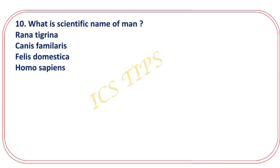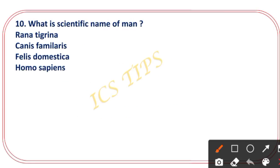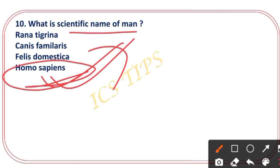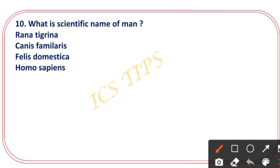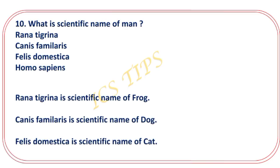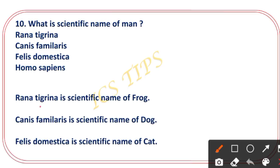The next question: what is the scientific name of man? The right answer is Homo sapiens. This is an important question that commonly appears in competitive exams. Homo sapiens is the scientific name — remember it for your exam.